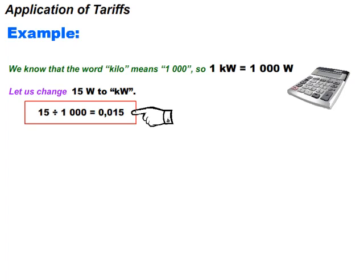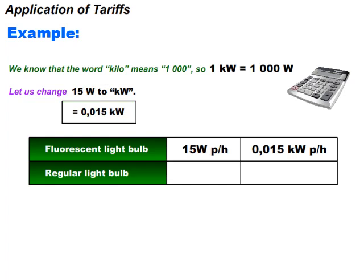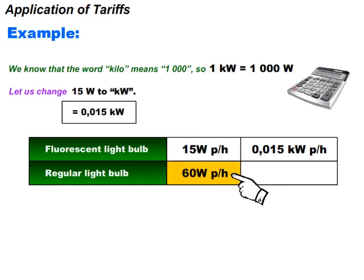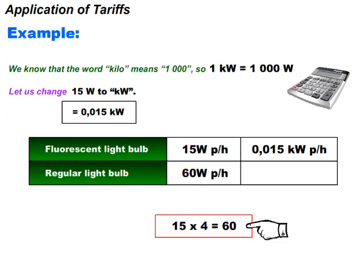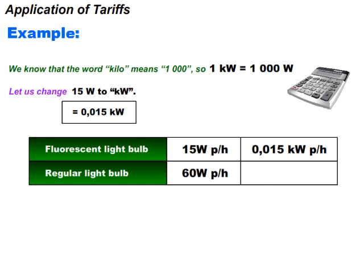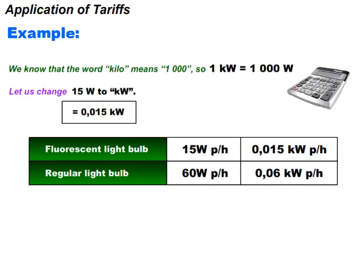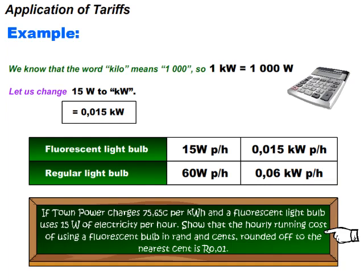15 divided by 1000 is equal to 0.015, so 15 watts is the same as 0.015 kilowatt. The table shows that fluorescent light bulbs use one quarter the amount of electricity, so a regular light bulb will use 60 watts per hour — because 15 multiplied by 4 is equal to 60. Therefore 60 watts is the same as 0.060 kilowatt, so a regular light bulb uses 0.06 kilowatt of electricity per hour, and a fluorescent light bulb uses 15 watts per hour.